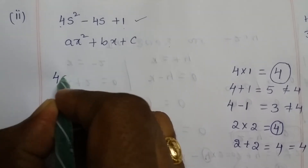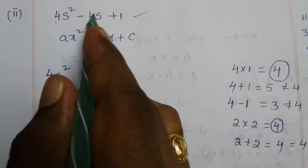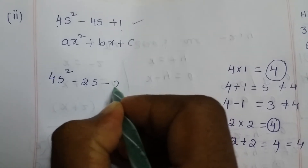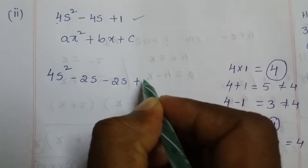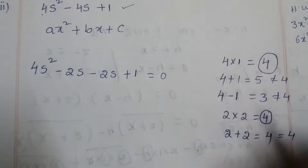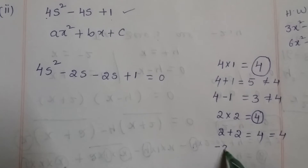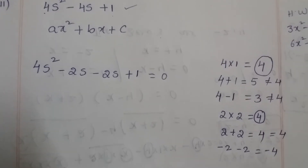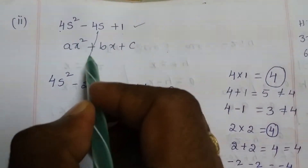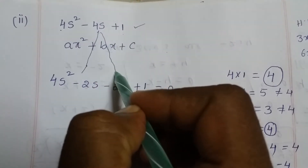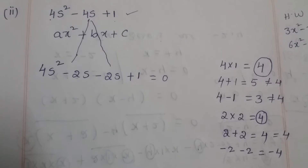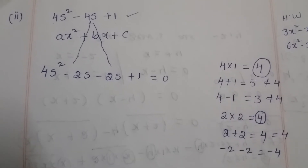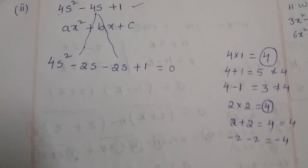I can write minus 4s as minus 2s minus 2s, plus 1 as the constant term. In the middle, minus 4 is there, and minus 2 minus 2 equals minus 4. So I am splitting the middle term as minus 2s minus 2s.